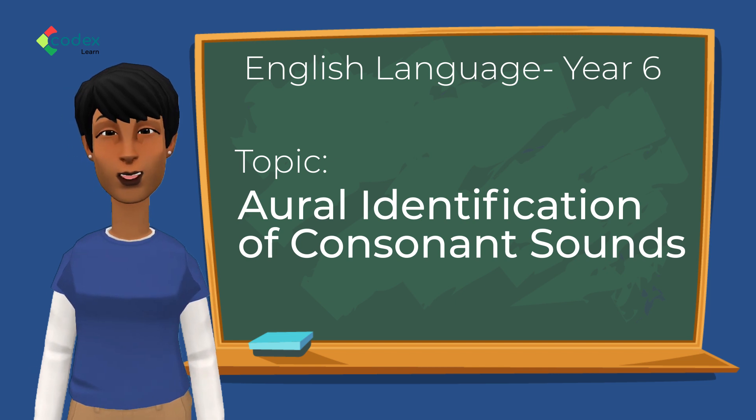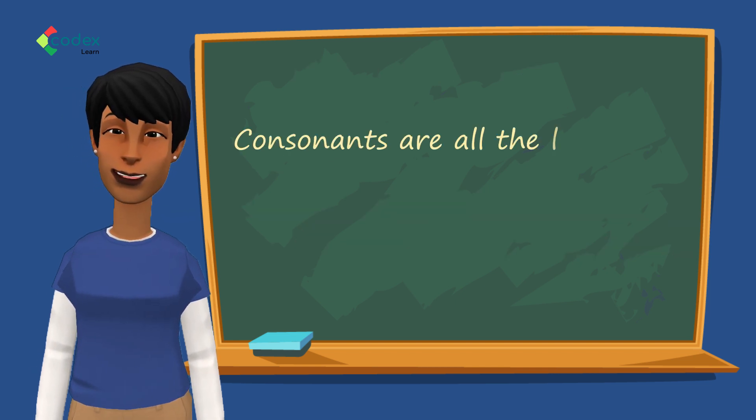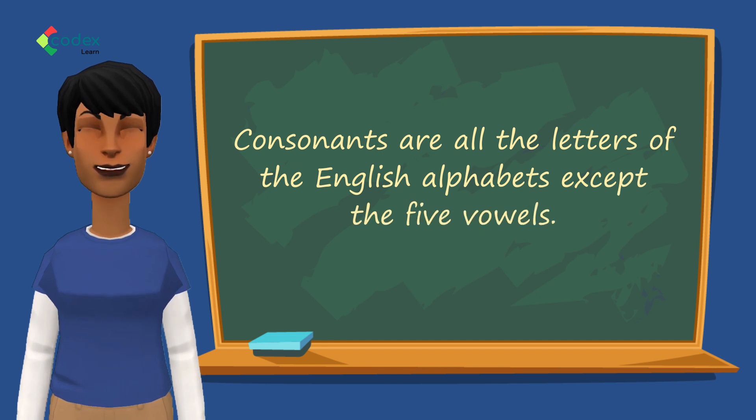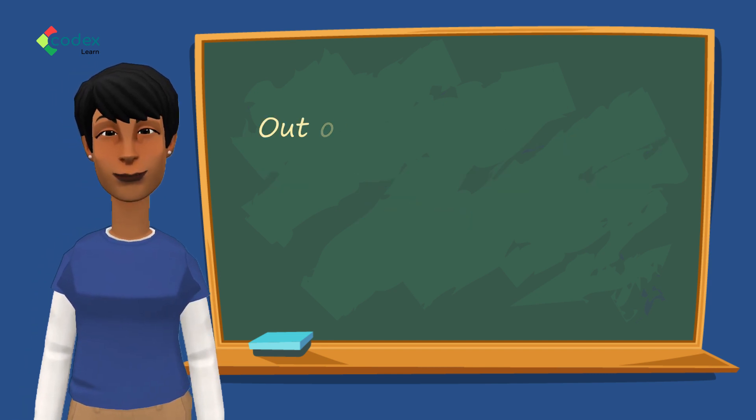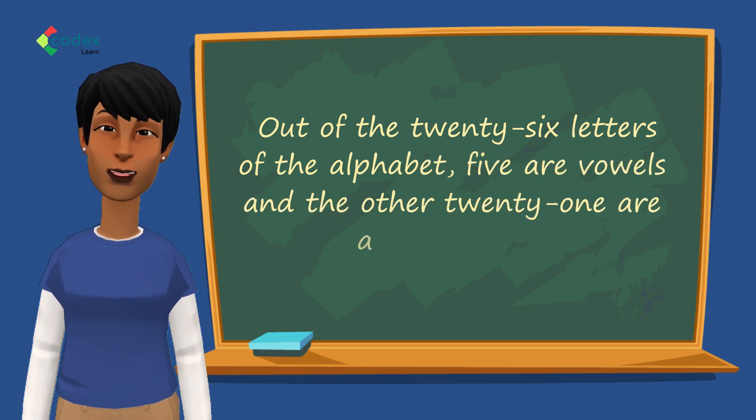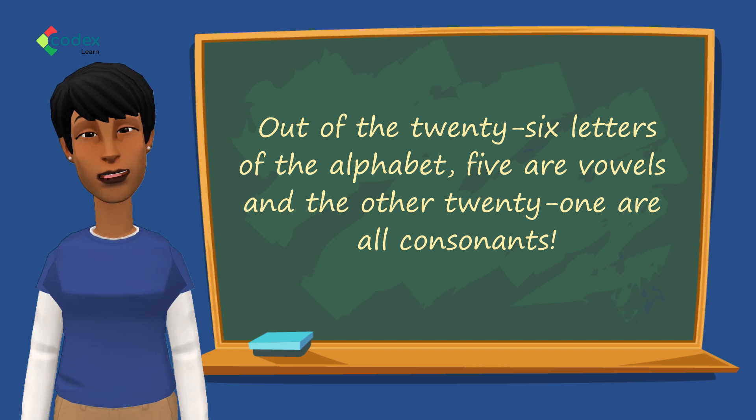We have learned in previous classes that consonants are all the letters of the English alphabet except the five vowels. What this means is that out of the 26 letters of the alphabet, five are vowels and the other 21 are all consonants.